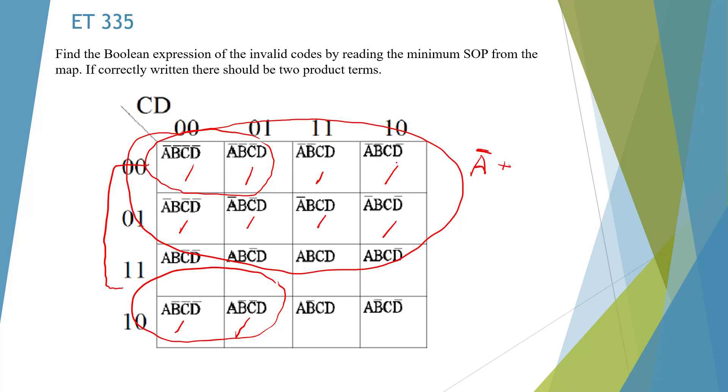So we're going to have A is gone, B bar will stay, and C bar stays, and D is gone. So we're going to have A bar plus B bar times C bar. Good.